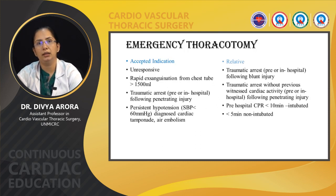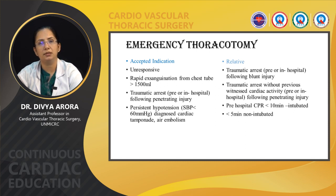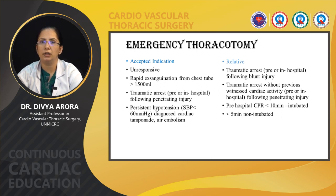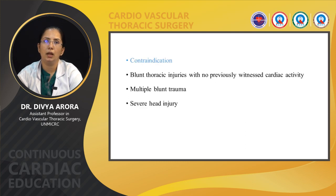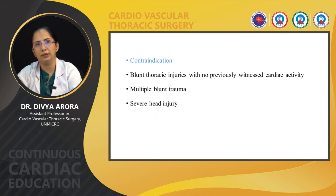Emergency thoracotomy: the mainly accepted indications are an unresponsive patient with rapid exsanguination of more than 1500 ml, traumatic arrest pre- or in-hospital following penetrating injury, and persistent hypotension with systolic blood pressure less than 60, cardiac tamponade, or air embolism. Relative indications are traumatic arrest following blunt injury, traumatic arrest without witnessed cardiac activity following penetrating injury, and pre-hospital CPR for less than 10 minutes if intubated or less than 5 minutes if non-intubated. Contraindications are blunt thoracic injuries with no previously witnessed cardiac activity, multiple blunt trauma, and severe head injury.